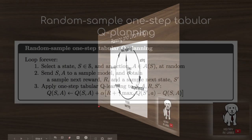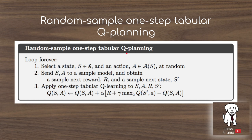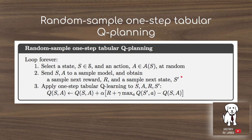The pseudocode for the random sample one-step tabular Q-planning algorithm illustrates a model-based agent. We use one step into the future for the temporal difference update, and a Q-learning off-policy approach — taking the max action with respect to the Q function at the update state. We select a state and action, then send this to a sample model to obtain the next state and reward — rather than interacting with the actual environment.